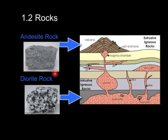Diorite, on the other hand, formed as an intrusive igneous rock. The magma never actually left the surface of the planet — it cooled within the lithosphere. And so in doing so, it cooled very slowly, and the crystals had longer times to cool out. Each individual mineral was able to be at its freezing point for a longer period of time, and so the crystals are much larger in the diorite rock, which cooled slower than the andesite rock, which cooled a lot faster.